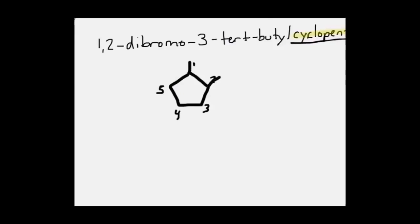At positions carbon 1 and carbon 2 are my bromines. Position 3 contains my tert-butyl branched alkyl substituent. That is all that is specified here.